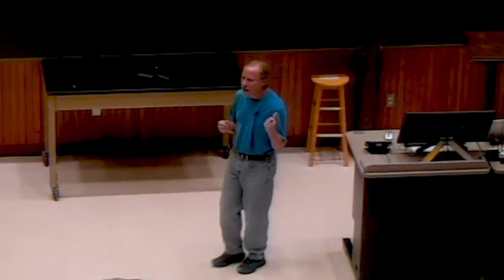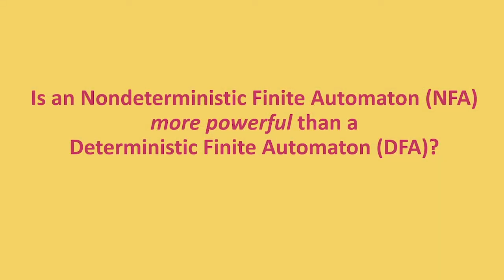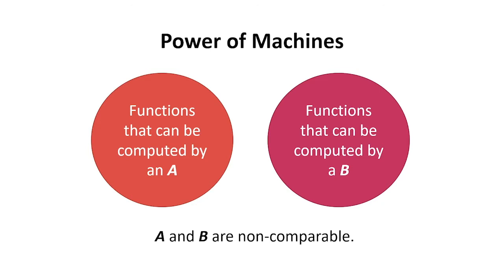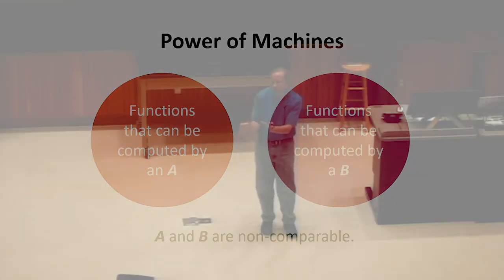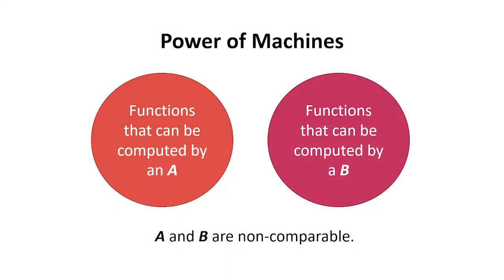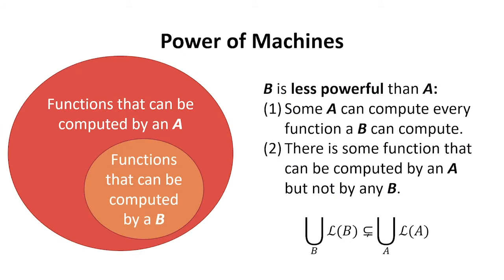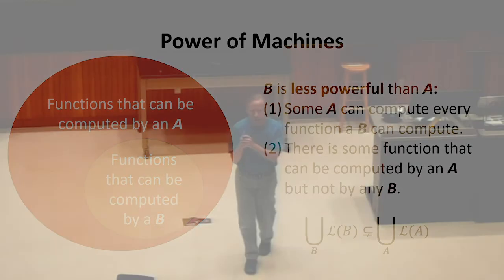For finite state machines, does adding nondeterminism add power? Our definition of the power of a machine is the set of functions it can compute. To say type A is more powerful than type B, we need to understand the sets of functions they can compute. They could be disjoint — A computes some things B can't and vice versa — or one could be a strict subset of the other. Functions that B can compute would be a strict subset of the functions that A can compute.